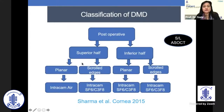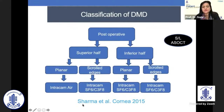If the DMD is in the superior half and is planar, meaning less than one millimeter, you would use intracameral air. But if it is in the superior half with scrolled edges, or it is in the inferior half whether planar or with scrolled edges, you would use intracameral SF6 or C3F8 gas.